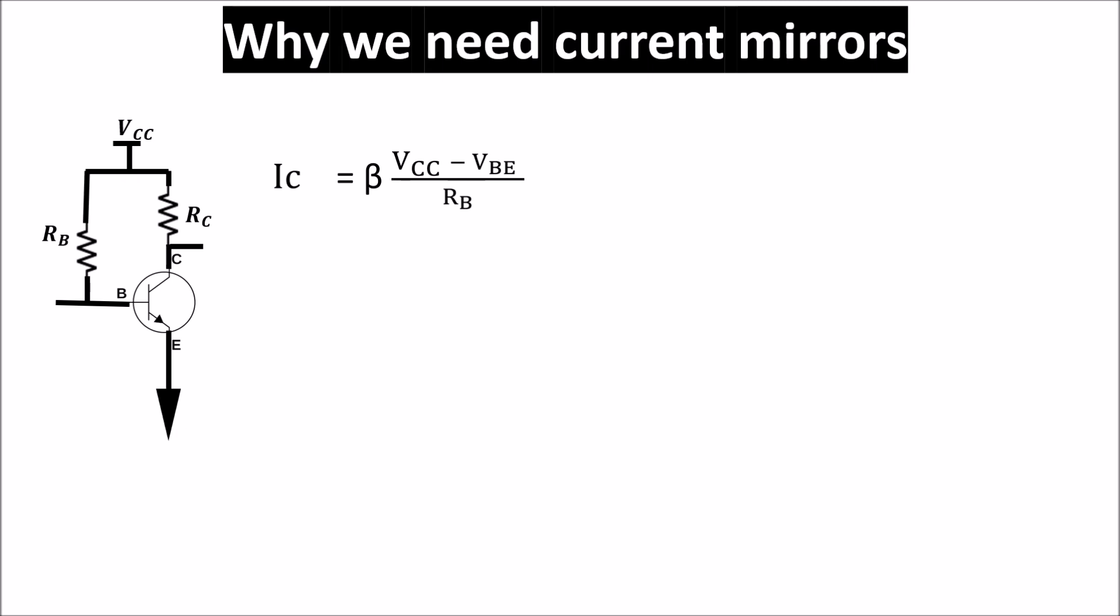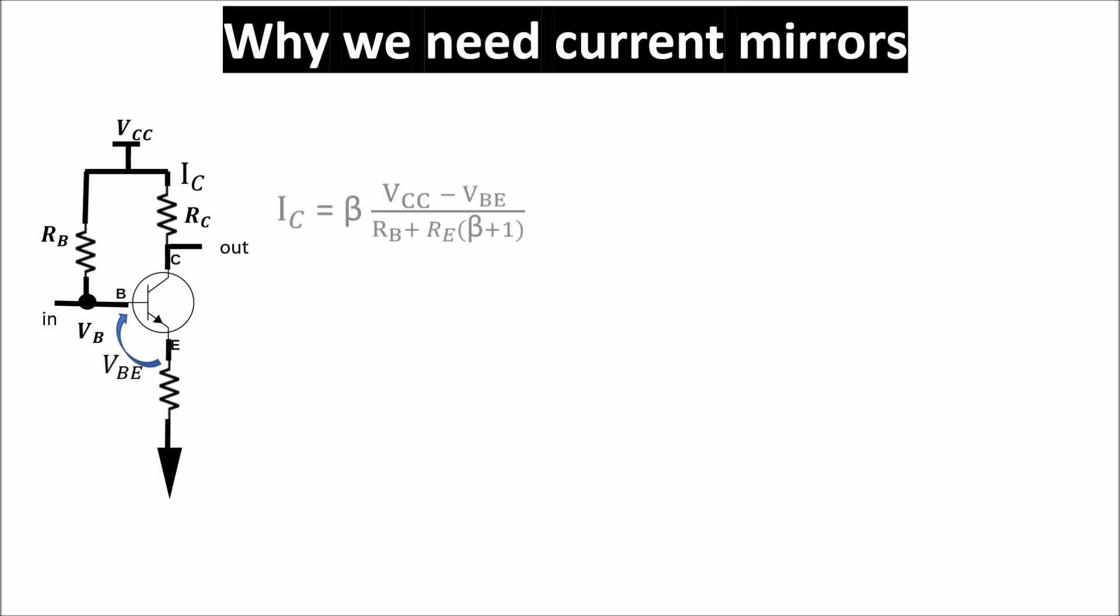Therefore, in order to avoid this beta dependency we put an emitter resistor to create a negative feedback. The collector current becomes this and if we make RE times beta plus 1 much bigger than RB we have a collector current independent on the beta.